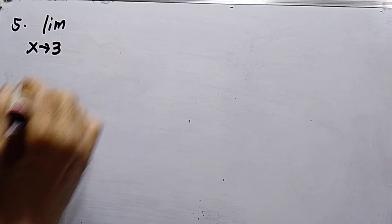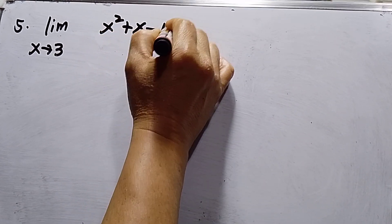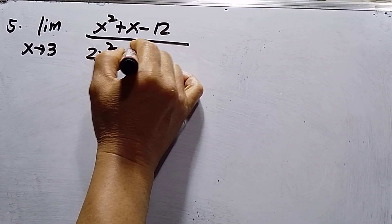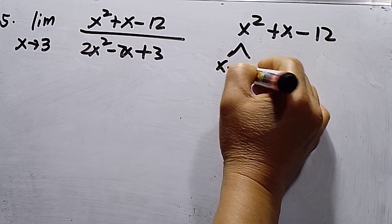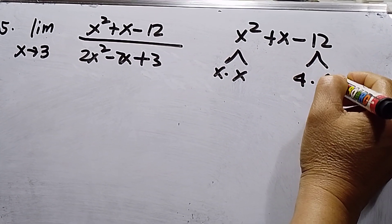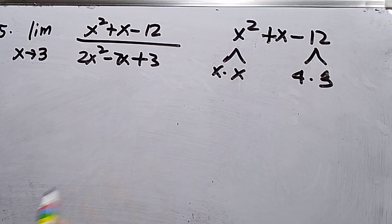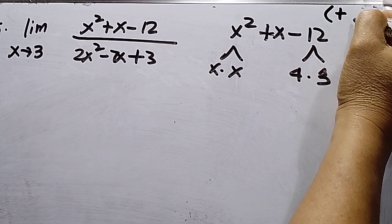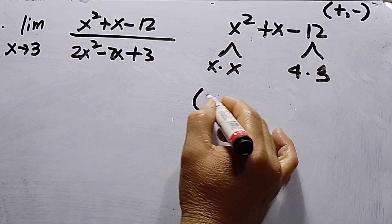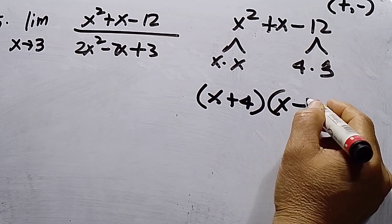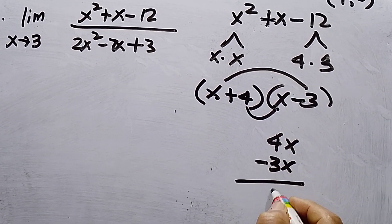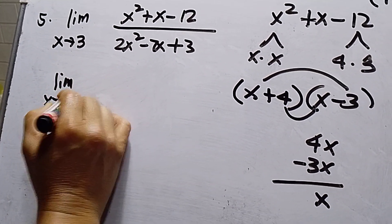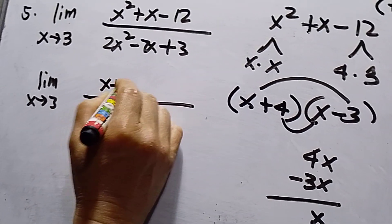Number five, the last problem: limit x approaches 3, function is x squared plus x minus 12 over 2x squared minus 7x plus 3. Factoring the numerator: x times x, and 4 times 3. The middle term is positive and last term is negative, so factors are plus and minus. Trying (x plus 4)(x minus 3): 4x minus 3x equals x — correct. Numerator factors are (x plus 4)(x minus 3).